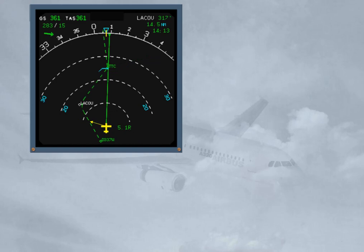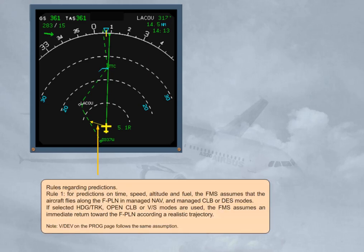If selected heading, track, open climb, or vertical speed modes are used, the FMS assumes an immediate return toward the flight plan according to a realistic trajectory. Note: VDEV on the PROG page follows the same assumption.